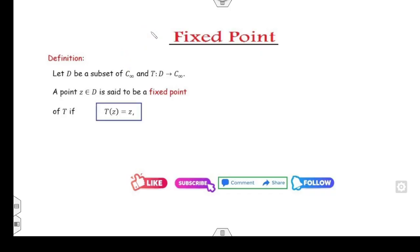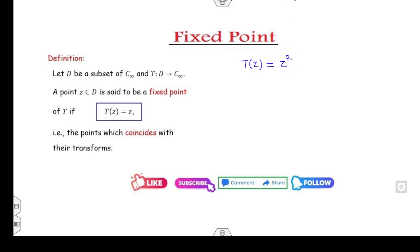The point Z is said to be the fixed point if the point coincides with the transformation. For example, if my transformation is Z² then there are two methods to check the fixed point. The first method: if you choose Z = 0, then T(0) = 0, which is the same as Z. Then you can say Z = 0 is a fixed point.